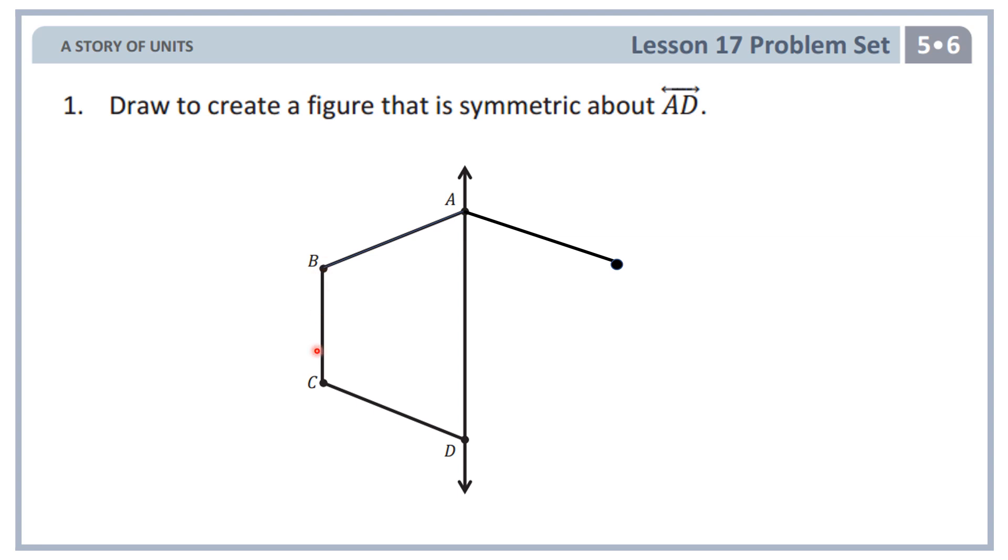Next, I'm going to do BC. So B goes straight down vertically to connect to C. I already have that point that is symmetric to B, so I would just go straight down. And that would be my symmetric line or symmetric segment of BC.